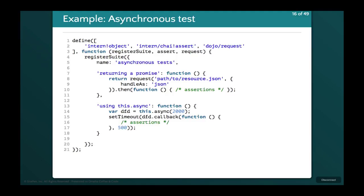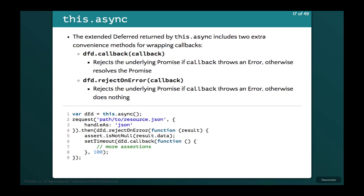We're setting the wait to a maximum of two seconds. Using setTimeout, after half a second we use deferred.callback, which tells it to resolve the promise as long as no errors are thrown inside — that's where we make our assertions. Alternatively, we just return a promise from the test and Intern picks up on that and waits for it to resolve. deferred.callback resolves the promise as long as it doesn't throw an error, and reject on error will reject the promise if any errors are thrown — useful if an AJAX call fails.